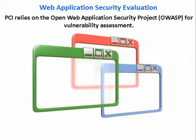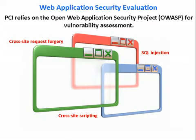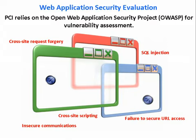Five of the top 10 OWASP security issues are cross-site scripting, SQL injection, cross-site request forgery, insecure communications, and failure to secure URL access. Be sure to test your application for the vulnerabilities listed on OWASP.